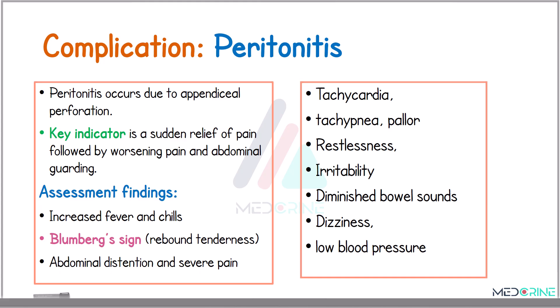Looking at the complications of appendicitis, peritonitis is one of the serious and life-threatening complications. It usually results from a perforated appendix, and a hallmark indicator of peritonitis is a sudden relief of pain followed by a resurgence of more severe pain and abdominal guarding. Assessment findings in peritonitis include high fever, chills, rebound tenderness or Bloomberg's sign, abdominal distention, and severe pain.